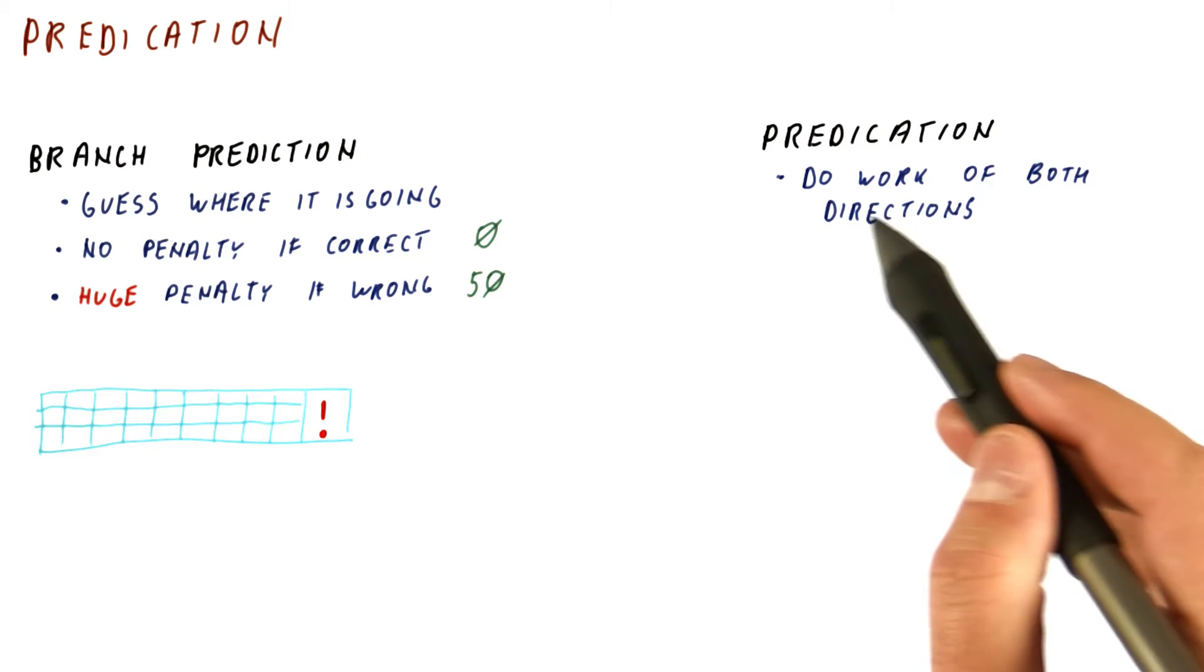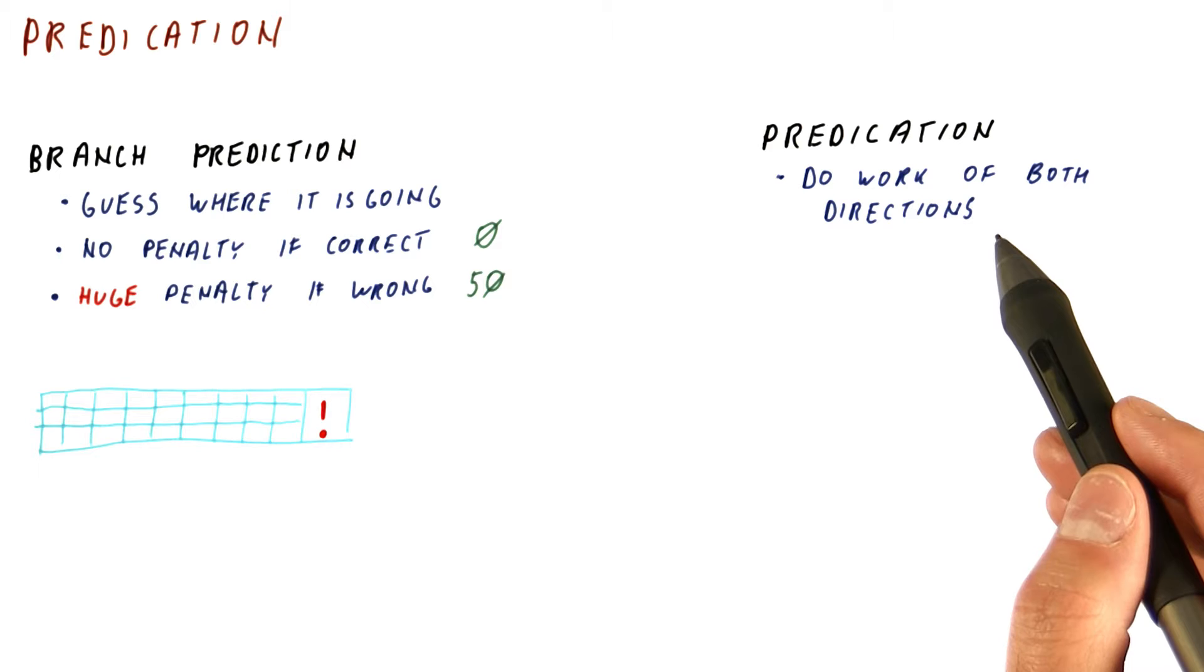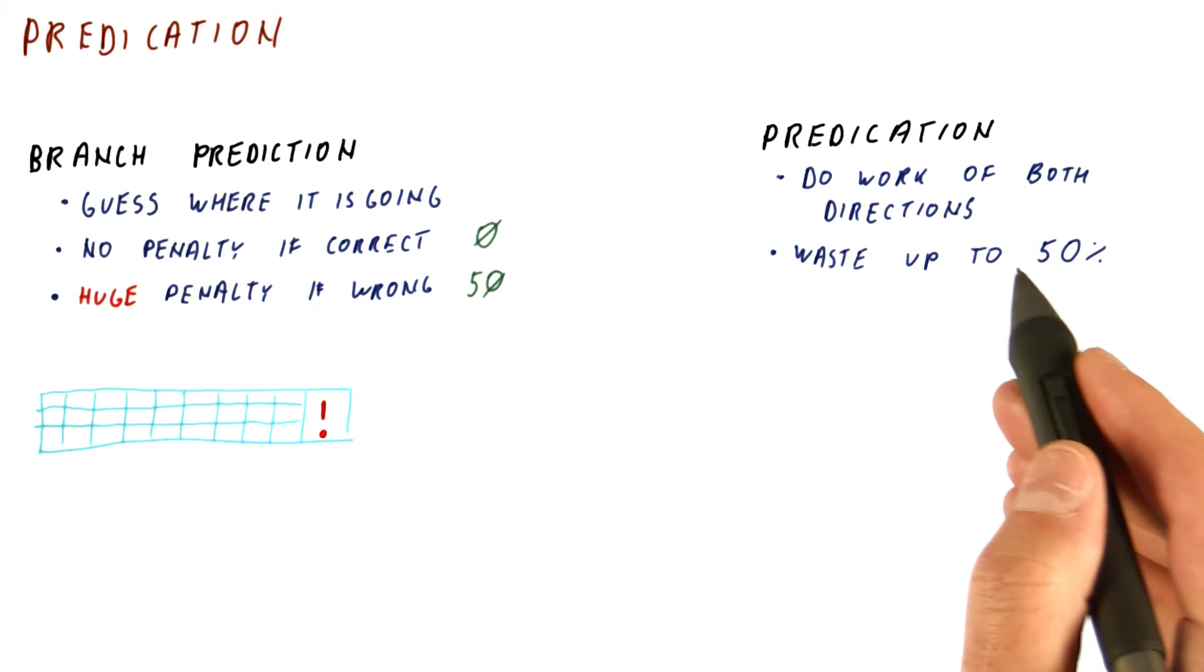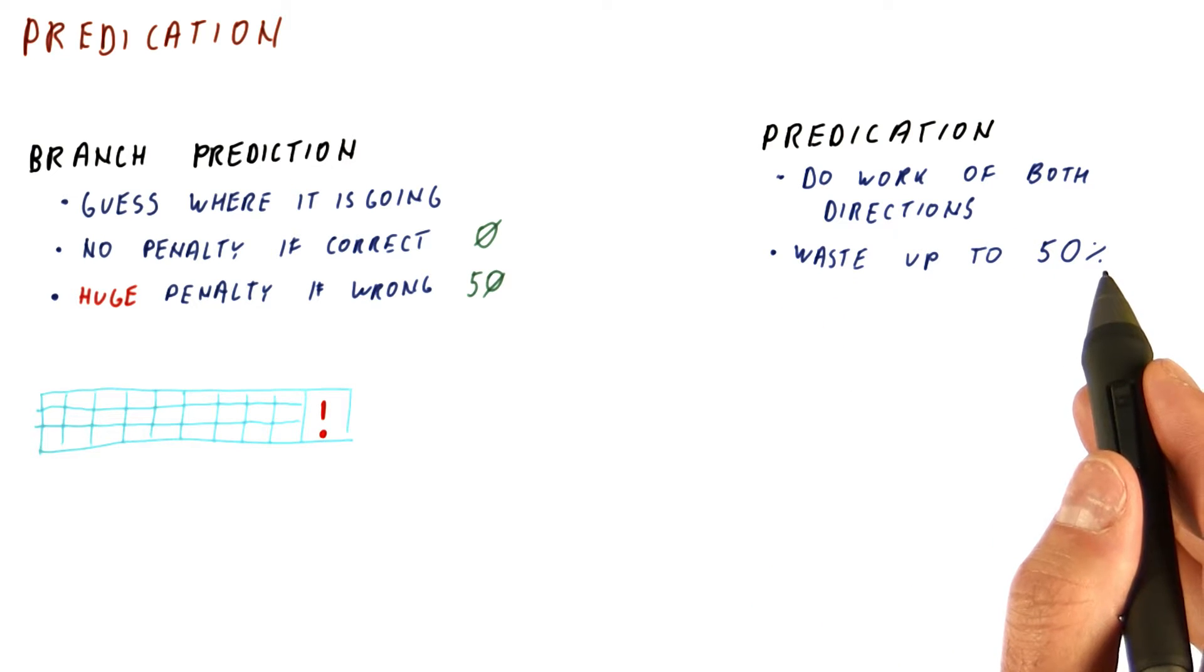Predication is about doing work of both of the directions. So we basically do the work of both a taken and not taken direction for a branch. That way the waste is up to 50% of the work we've been doing.